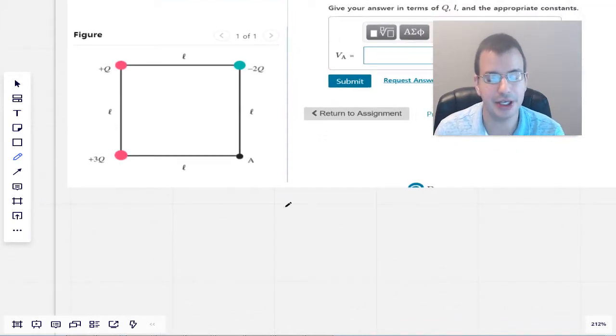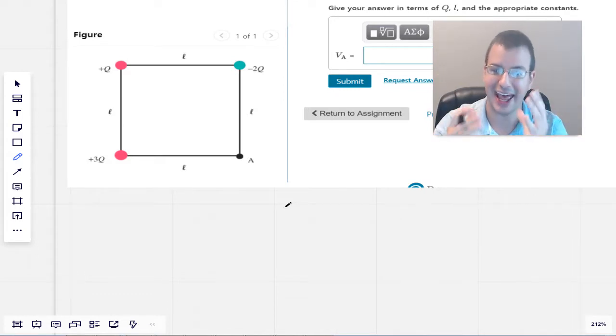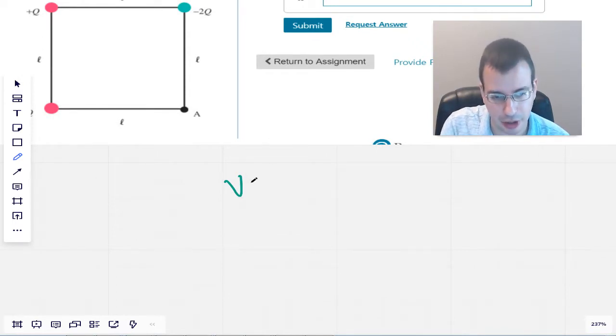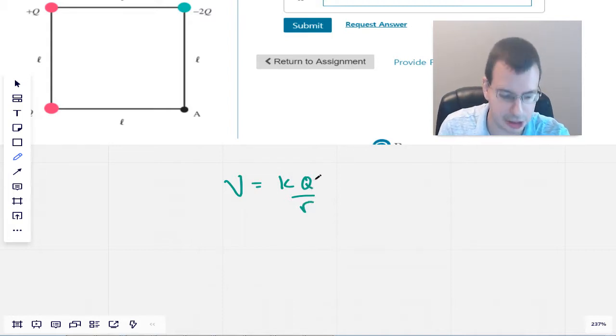So, since potential is a scalar, it means we can just find each one and add them all up. We know the potential for a point charge, it's just one of those things we memorize, is K Q over R. I'm going to use small Q, just so I don't get it confused with the Q that they're using.